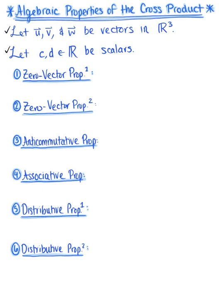The first property is the zero vector property, which says that if we take a vector u and cross it with itself, we end up with the zero vector. We also have a second zero vector property: if we cross vector u with the zero vector, that's equivalent to crossing the zero vector with vector u, which ultimately gives us the zero vector.